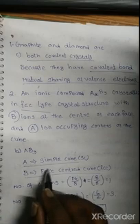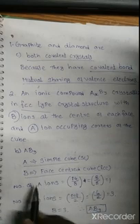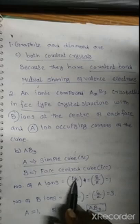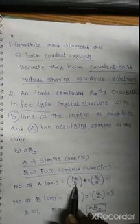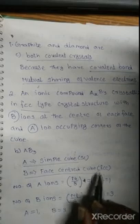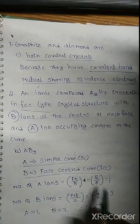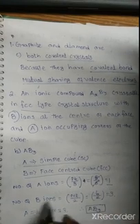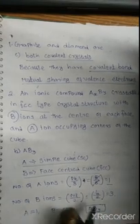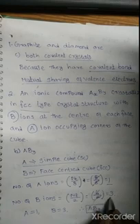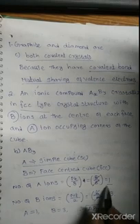For a face-centered cubic unit cell, the number of A ions = Nc/8 = 8/8 = 1. The number of B ions: there are 6 faces, so 6/2 = 3. Therefore, the formula of the compound is AB3.